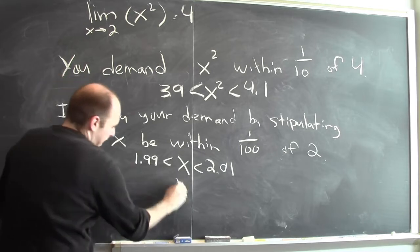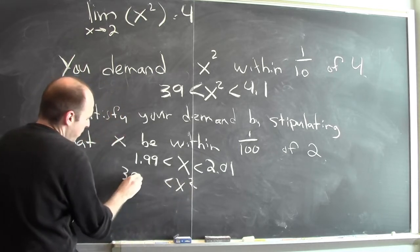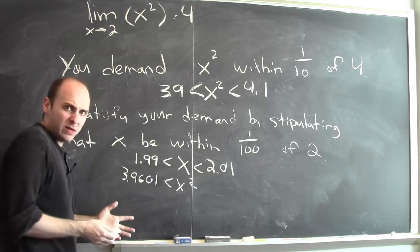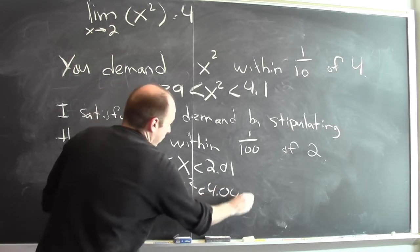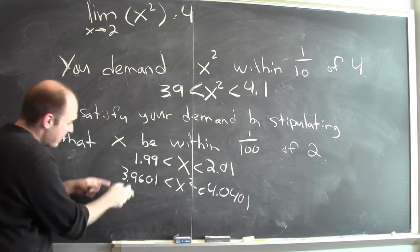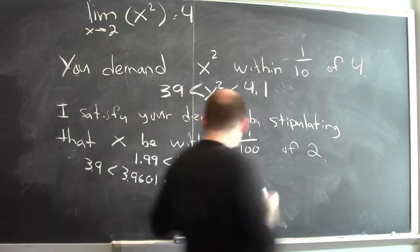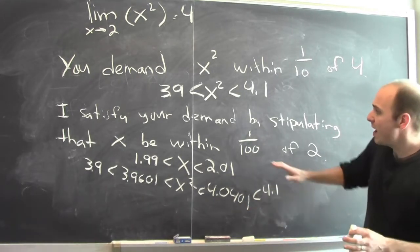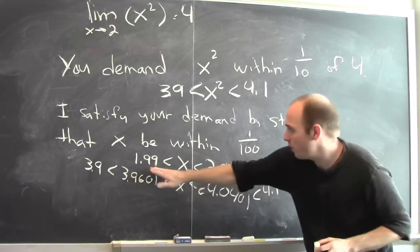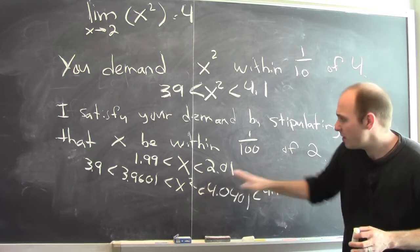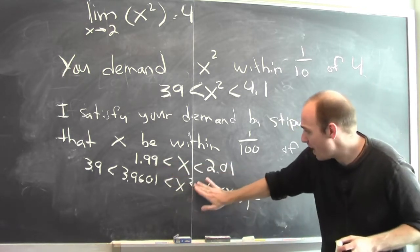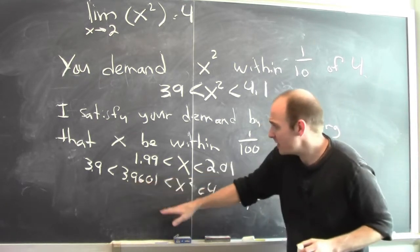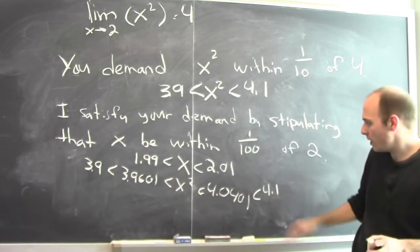If x is bigger than 1.99, then x squared is bigger than 3.9601. Looking at these numbers: 3.9601 is bigger than 3.9. And on the other side, 4.0401 is smaller than 4.1. So if x is within a hundredth of 2, then x is between 1.99 and 2.01, and that means x squared is between 3.9601 and 4.0401. Since x squared is bigger than 3.9601, it's bigger than 3.9, and since it's smaller than 4.0401, it's smaller than 4.1.